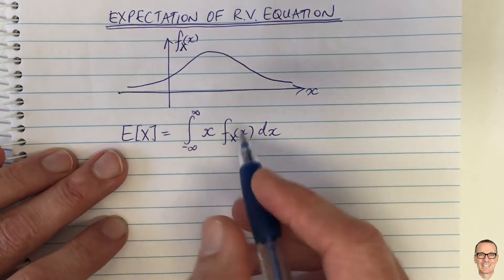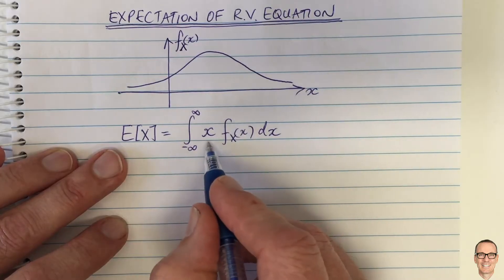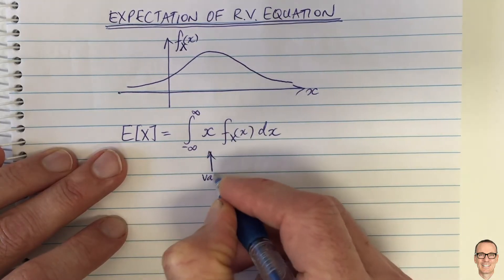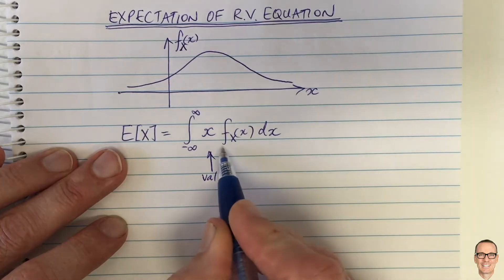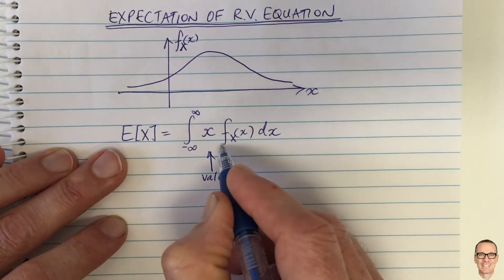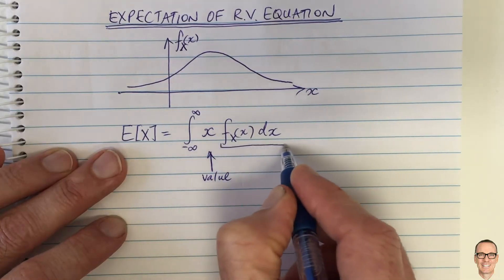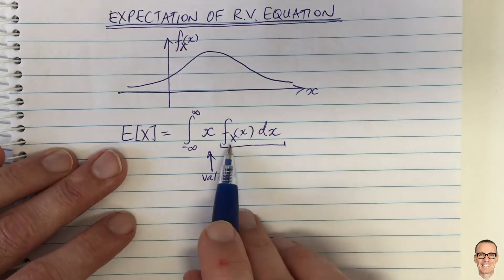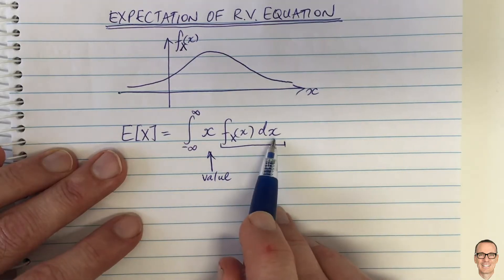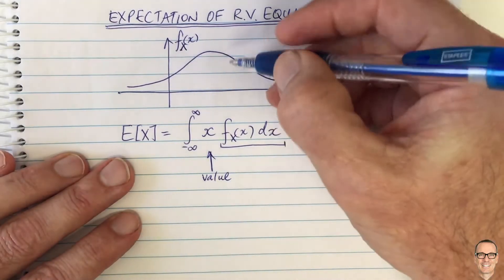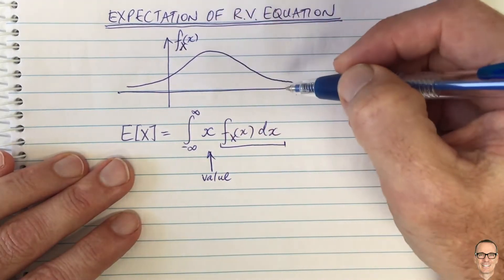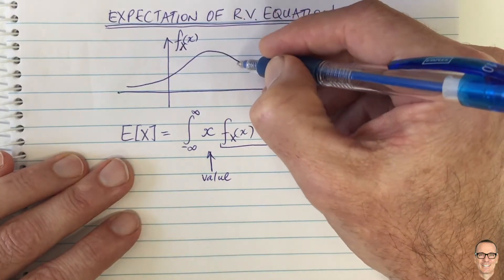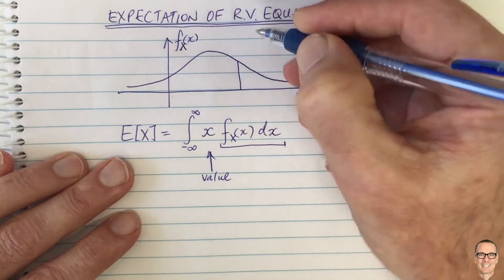In this expectation we have the value x — so this is the value — and then we multiply the value by this term here. Let's try to understand that term a little bit, and to do that let's remember what the PDF is actually telling us physically.